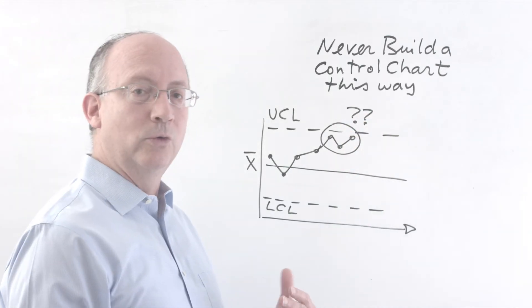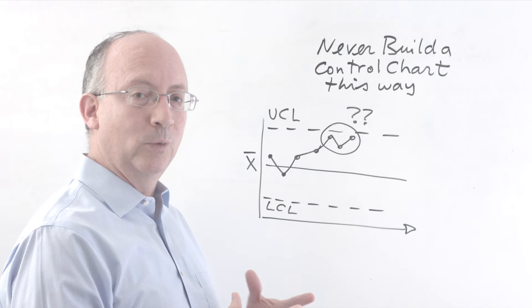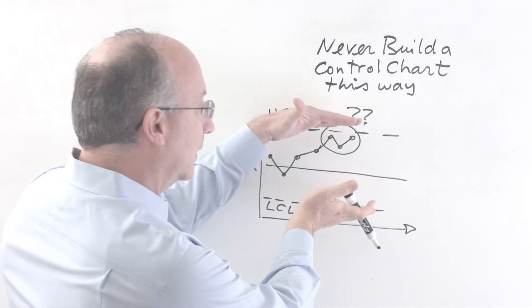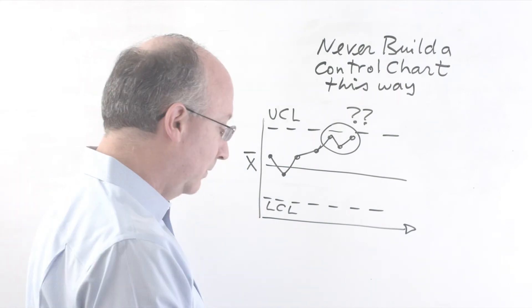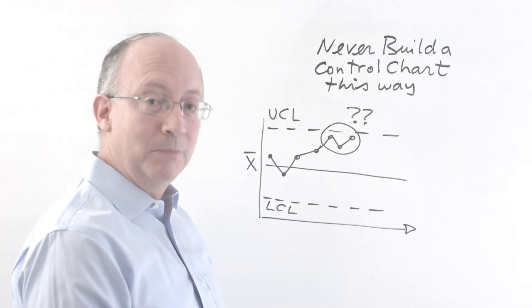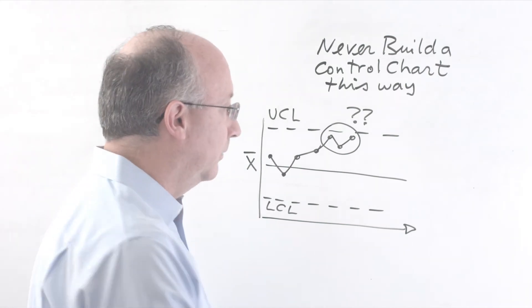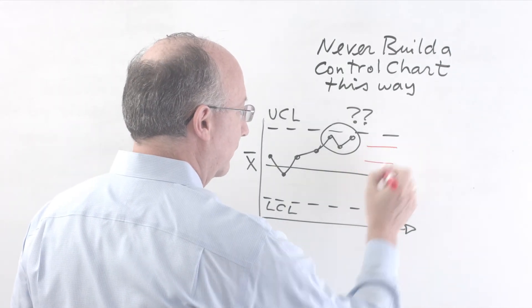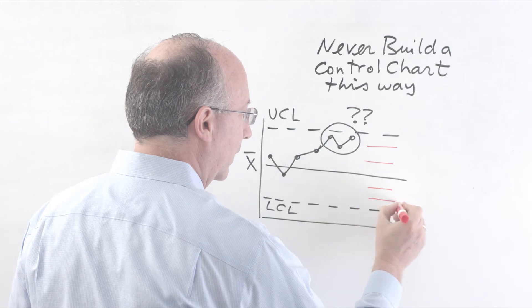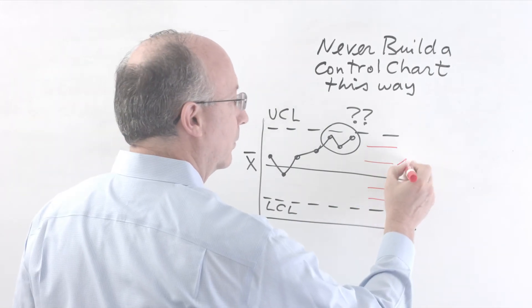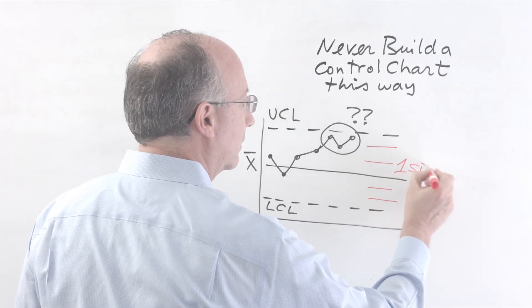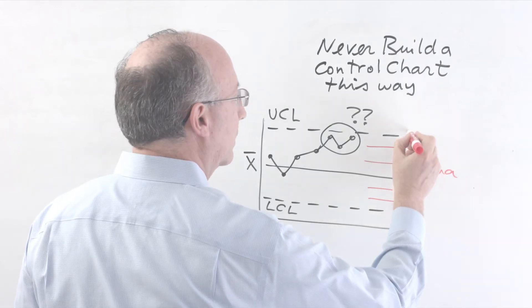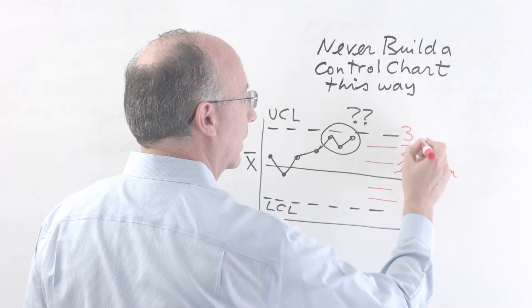So in order to do this analysis where something may be going on with the variable even though it still is inside the limits, we have developed some intermediate lines. These intermediate lines divide this space into thirds like this and also on this side. And this line is called the one sigma line, this one is a two sigma line, and this one is known as a three sigma line.